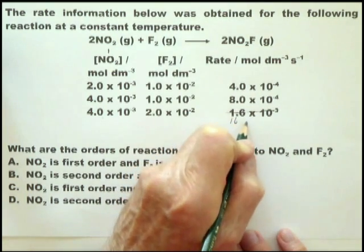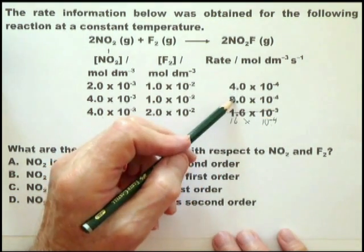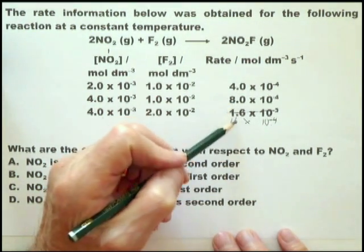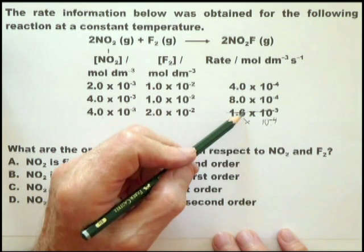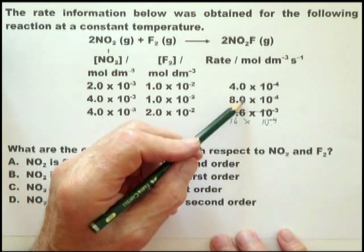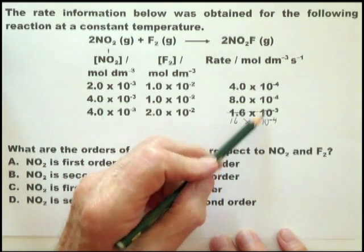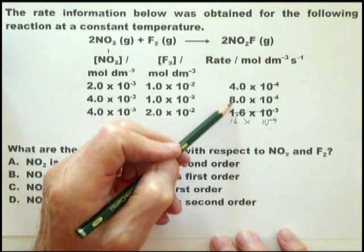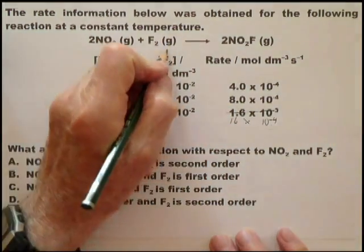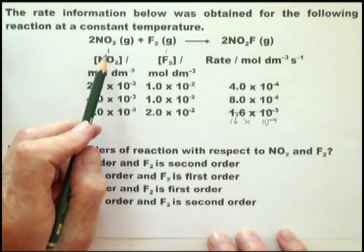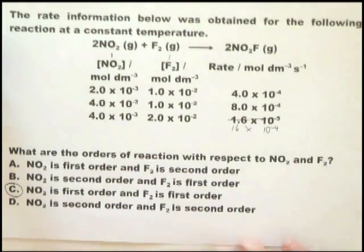Then you look at it from the point of view of keeping the NO2 concentration constant. And you find in this case the fluorine concentration has doubled. And then you look at the rate, and then it becomes a little bit unclear. And what I do in these circumstances, I change it to 16 times 10 to the minus 4. So that the power of 10 is the same, and it becomes so much easier to see that that has doubled. So it's clear here now that we double the fluorine concentration, we double the rate, and therefore the power is 1. So it's first order with respect to NO2, and first order with respect to fluorine. And we go down here, and the answer is C. NO2 is first order, and fluorine is first order.